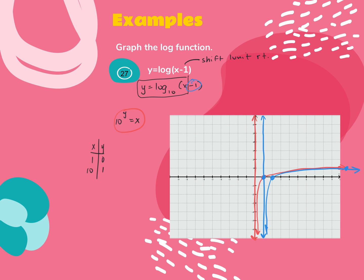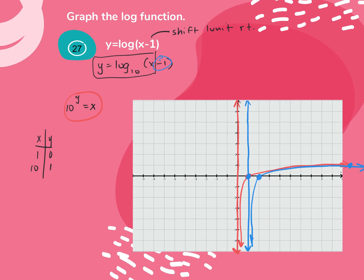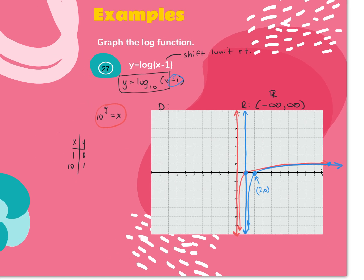The blue graph is the graph of log base 10 of (x minus 1) — graph the basic, then include the shift. The original x-intercept was at (1, 0); the new x-intercept is at (2, 0). We always want the points where the graph crosses the axis lines highlighted. Because this had a horizontal shift, the domain changes: my asymptote moved to x equals 1, so my domain changed from (1, positive infinity). The parenthesis is used because the graph doesn't touch x equals 1.